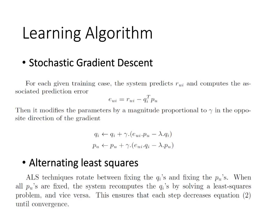The first learning algorithm is stochastic gradient descent (SGD). In SGD, we calculate the error between the predicted and actual values, then update q_i and p_u using a lambda parameter which controls the magnitude of the gradient direction.